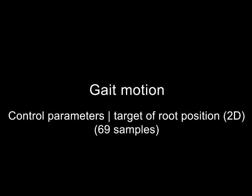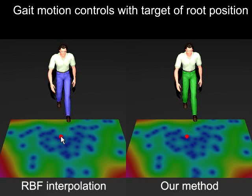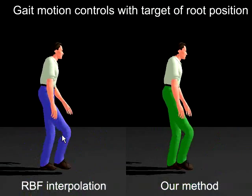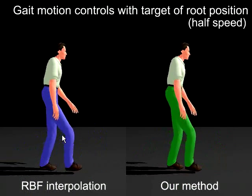The next sample generates gait motions by giving the final root position after two strides. Notice that our method has less foot sliding than radial basis function interpolation.